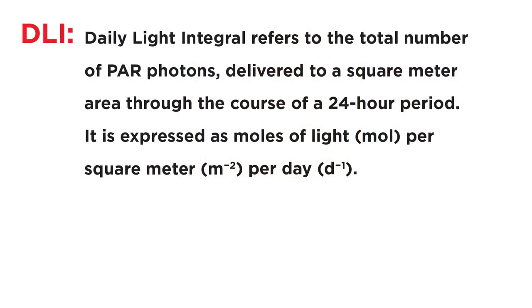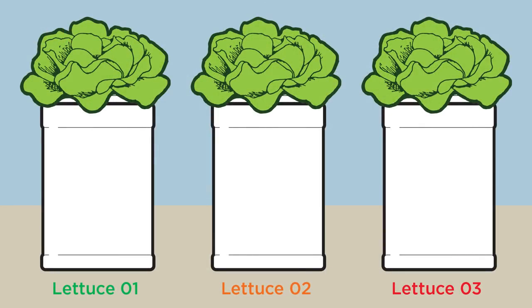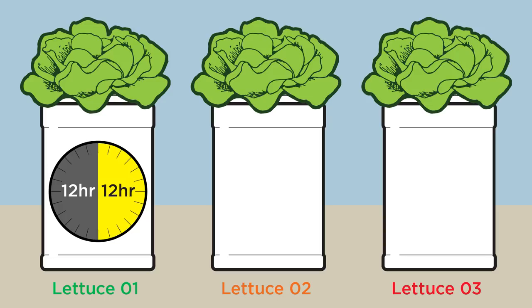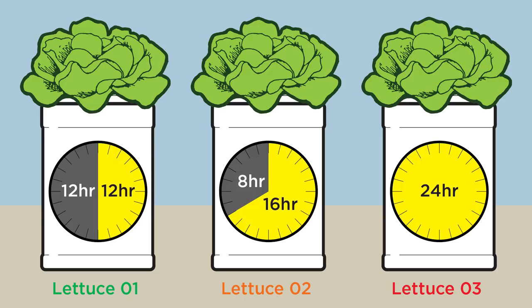In today's experiment, we're trying three different light durations, but we're also trying three different distances. You might ask: can't you change more than one variable? We're actually trying to match a variable — we're trying to create the same DLI for each plant. DLI, or Daily Light Integral, is a sum of all the photons reaching the plant canopy over a 24-hour period. Our target DLI for this test is 16. Plant 1 will get 12 hours on and 12 hours off. Plant 2 will get 16 on and 8 off. And plant 3 gets 24 hours on.